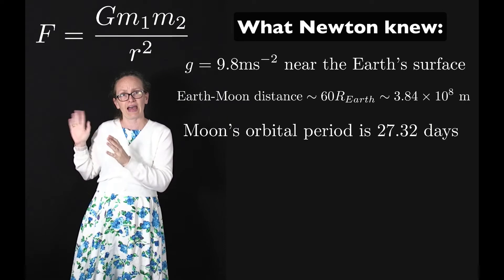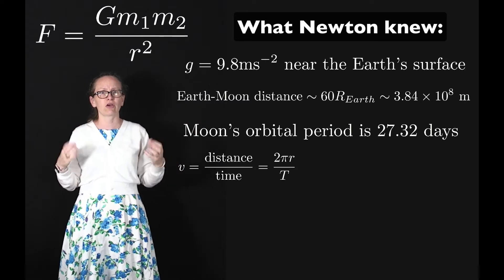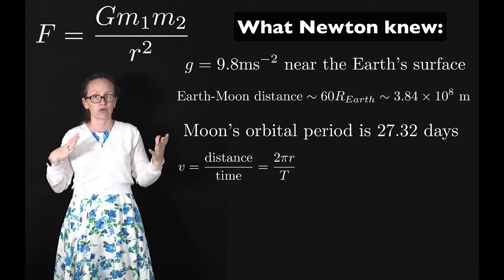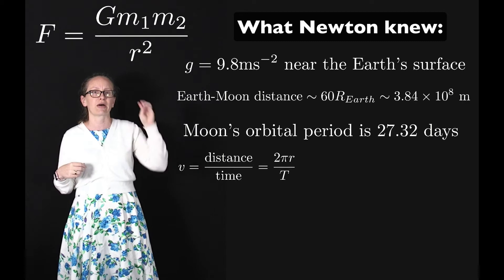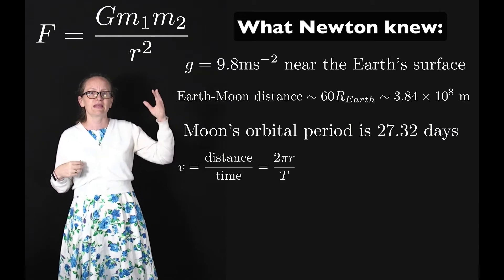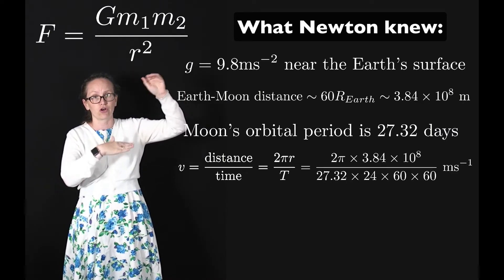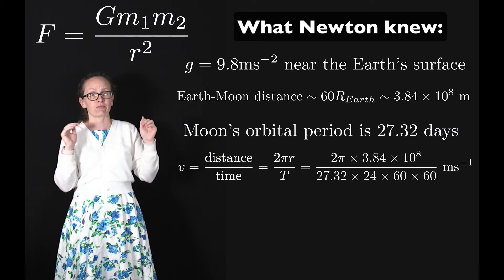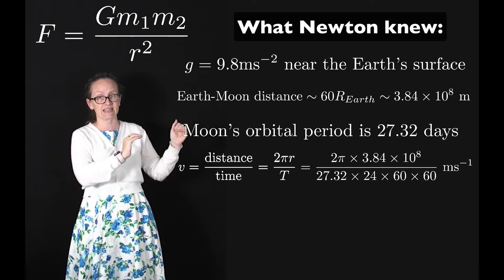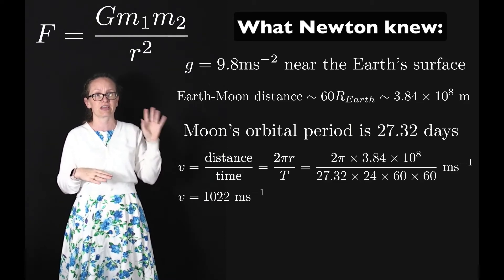From knowing these three facts, Newton could work out the orbital speed of the Moon. We know that speed is just given by the distance divided by the time. For something which is moving around a circle like the Moon circling the Earth, this is given by the circumference divided by the period. For the Earth-Moon system, the speed is given by 2π times 3.84 times 10 to the 8, because that's the radius of the Moon's orbit, divided by the period which is 27.32 days which we need to get into seconds. We times it by 24, then by 60 and by 60. Solving this, we can work out that the Moon is traveling at a speed of 1022 meters per second.